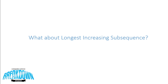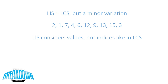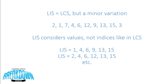Now, what about the longest increasing subsequence problem? Let's compare exactly how similar these two problems are. An LIS is actually the same thing as an LCS with a minor variation. In an LIS problem, we're considering the values in an array, not just its indices as in the LCS. So if we have some sequence of digits, the longest increasing subsequence problem tries to find the largest set of numbers from this set that is increasing in order and in its indices. Examples would be 1, 4, 6, 9, 13, 15 or 2, 4, 6, 12, 13, 15. Notice these are all the same length, and it's the same problem as the LCS.